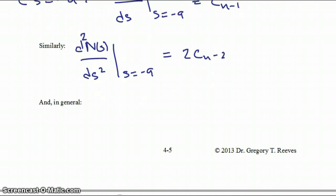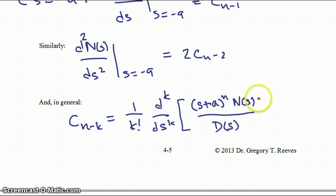In general, if you want to know the value of your coefficient C n minus k, that's equal to 1 over k factorial times the kth derivative with respect to s of s plus a to the n times your numerator divided by your denominator, all evaluated at the point s equal to minus a.